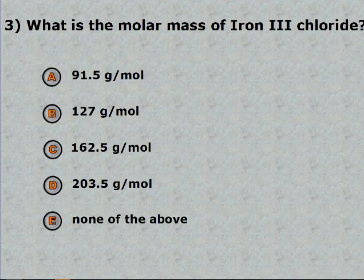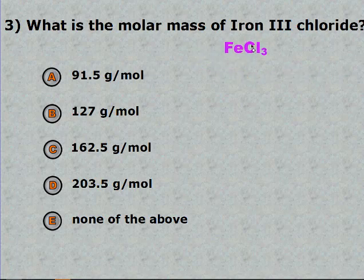I'm going to pause the video and get your molar mass of iron 3 chloride. Restart when you have an answer. So iron 3 chloride was FeCl3, so you should have gotten C, 162.5. One iron and three chlorines.